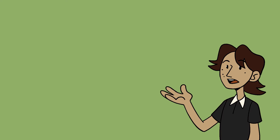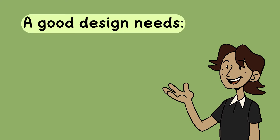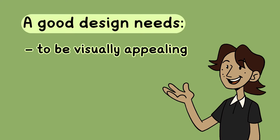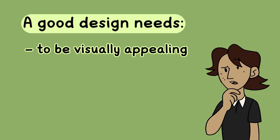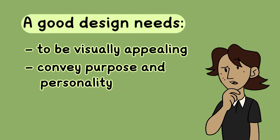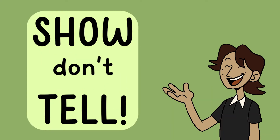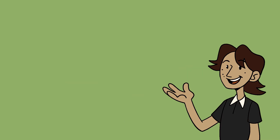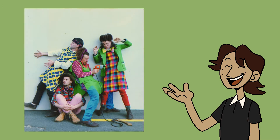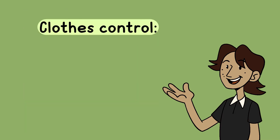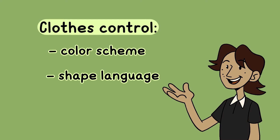We've learned throughout the series that a good character design needs to not only be visually appealing, but also convey to the audience their purpose and personality. Basically, show don't tell. Clothes play a huge part in this because they'll usually be the things controlling the color scheme, shape language, and silhouette.